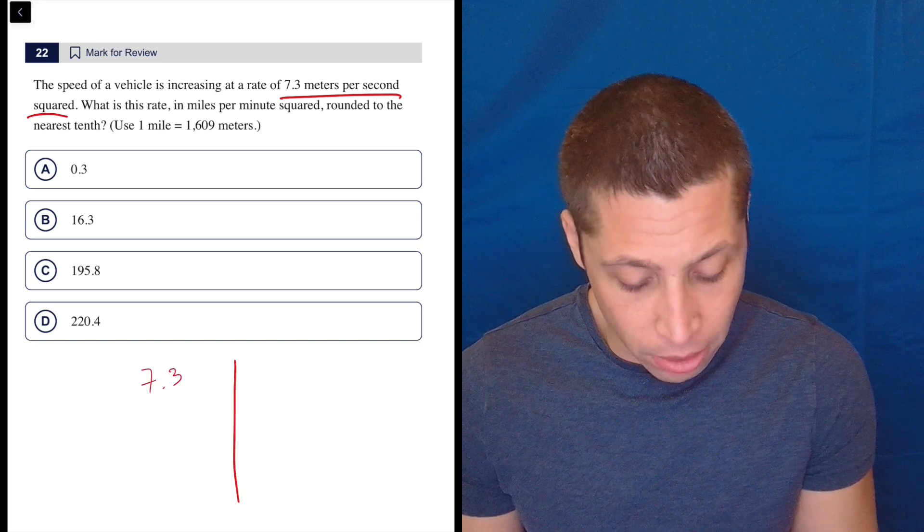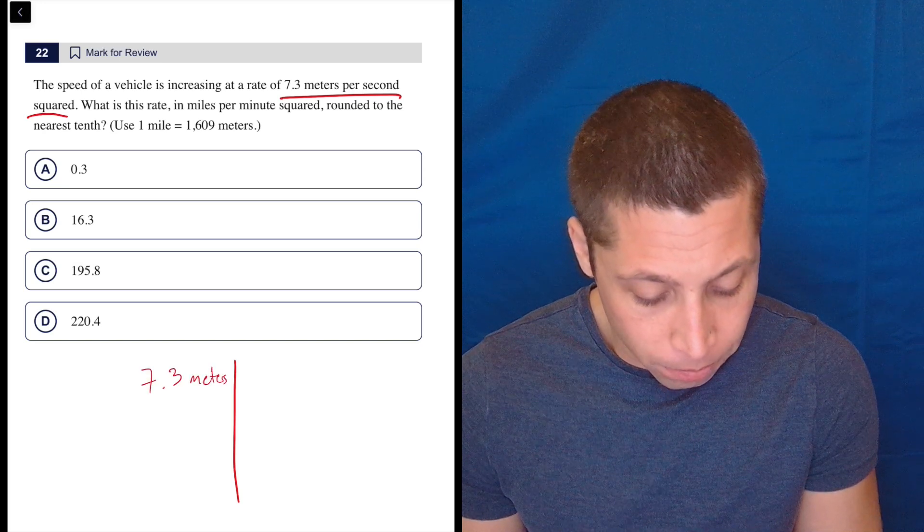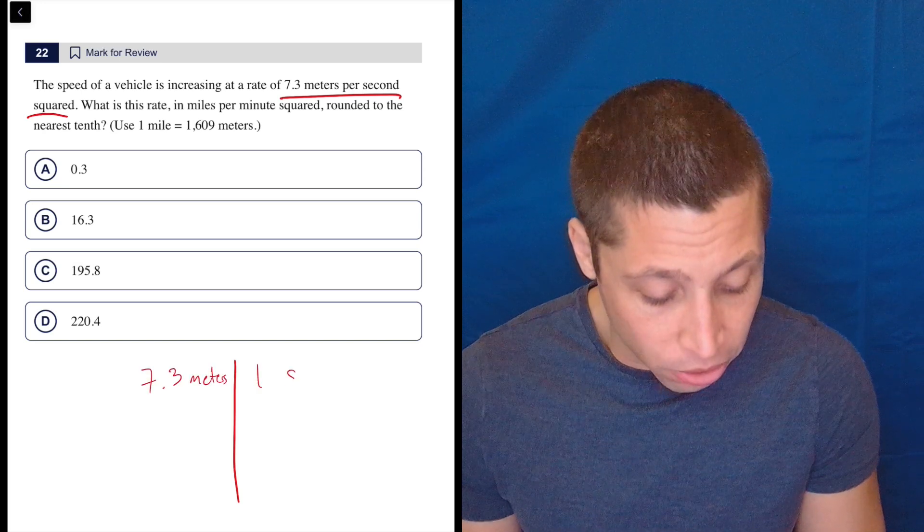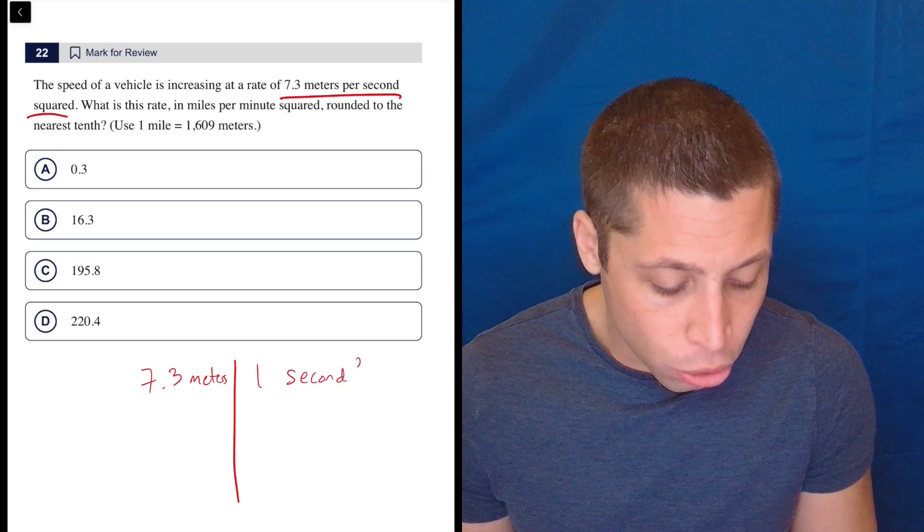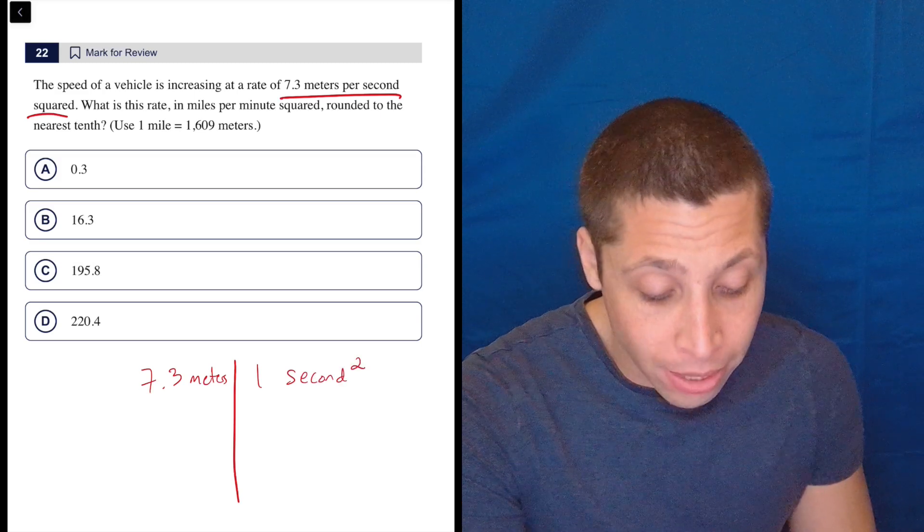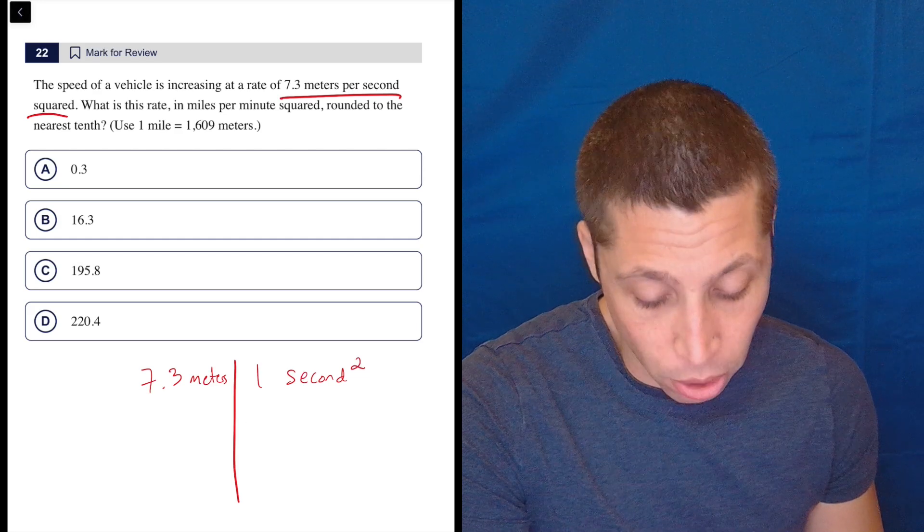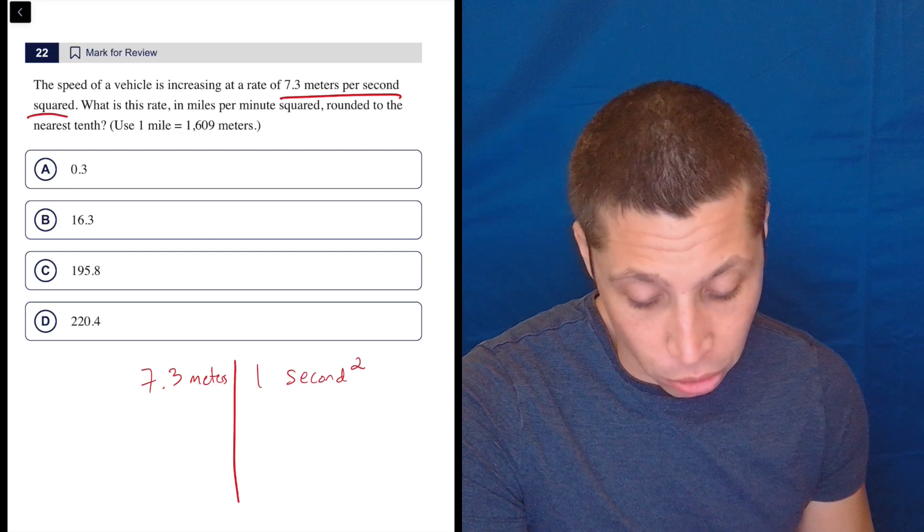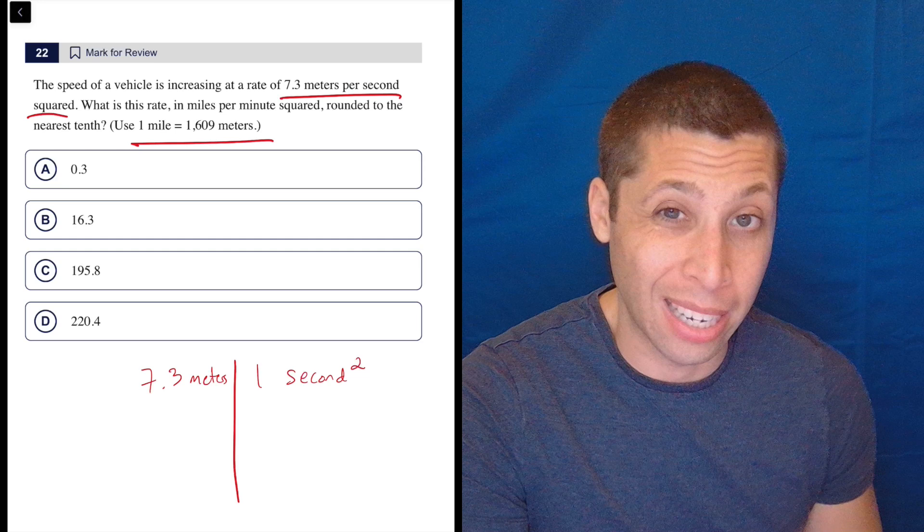So split them apart, 7.3 meters per second, so per second, but it's second squared and that's going to matter. Now they want this rate in miles per minute squared, rounded to the nearest tenth. So what I would do here is I would just start with the meters to miles thing because that's kind of given to me.